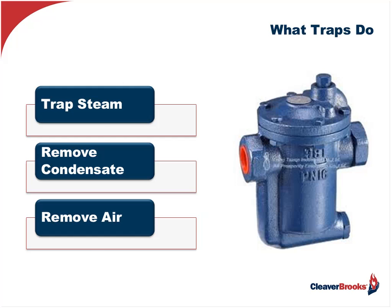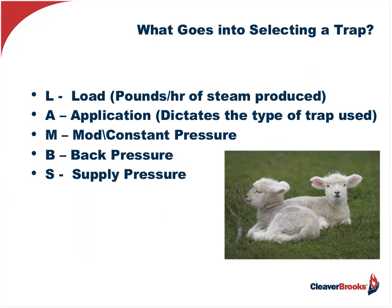How do I select a trap? Before we start selecting traps, we have to lay out the parameters. What's the load — pounds of steam per hour that's going to result in condensate? What's the application? Because this will dictate the type of trap used. Is it an air coil, a steam line, a radiator, a steam tracer line, a jacketed kettle? Is it a modulating or constant load? Very important in terms of trap type. And what's the back pressure and the supply pressure? That'll give me my differential so I can make sure I evacuate the condensate properly through that trap.